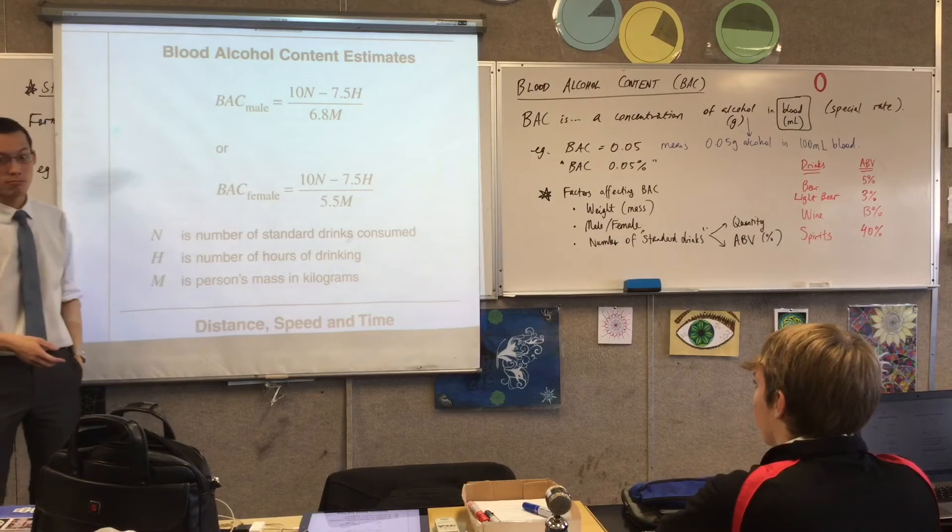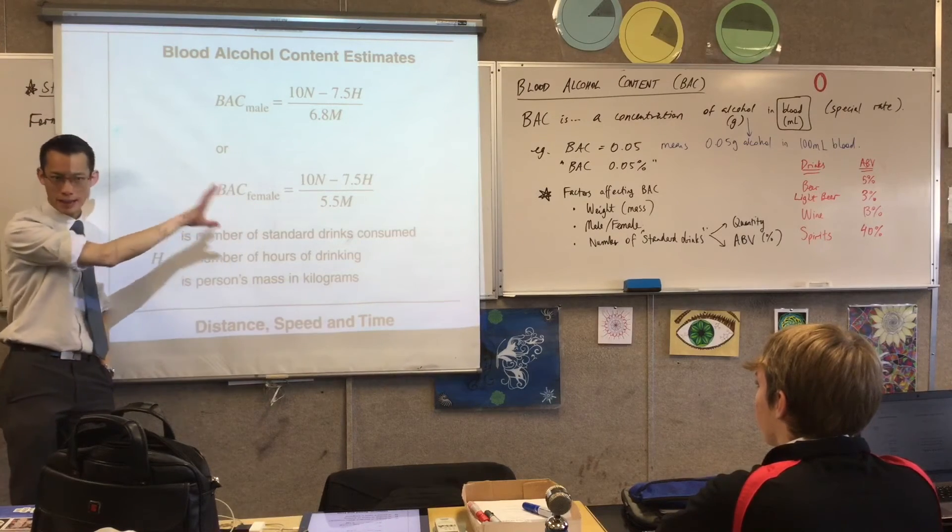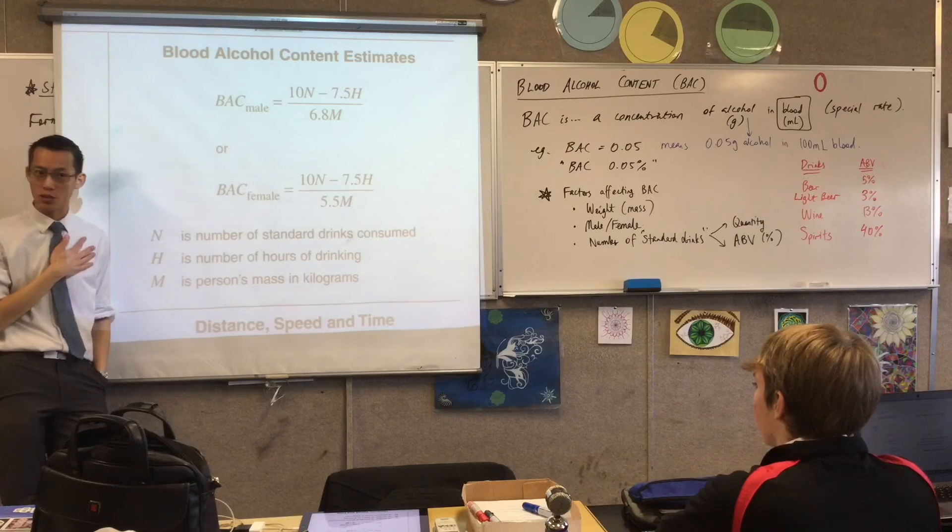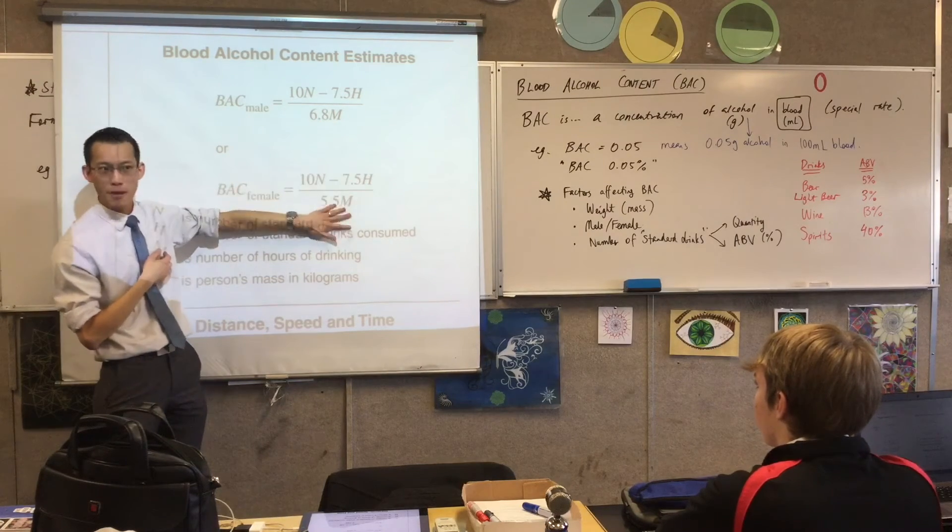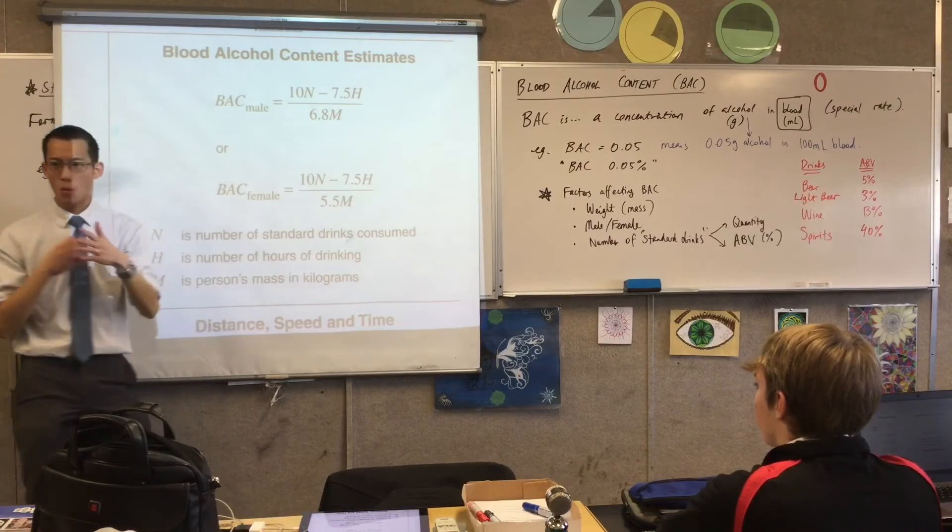Then you've got this M on the bottom, right? M stands for? Mass. Mass, right? This is why I pointed out don't just call it weight, call it mass, because the formulas are going to use it this way. Now do you notice the M is on the bottom of the, it's on the denominator of these formulas in each case. What does that mean?